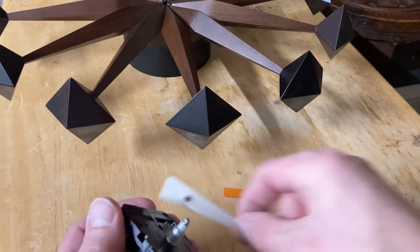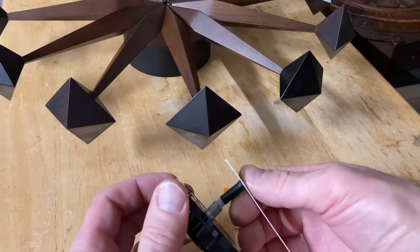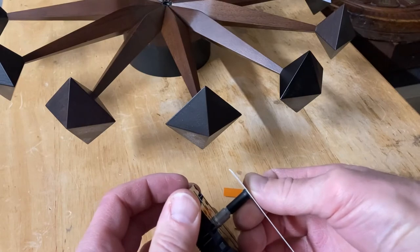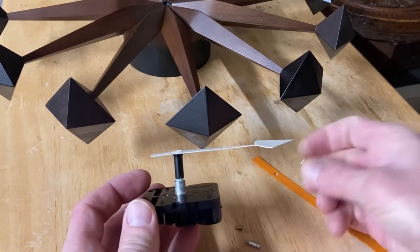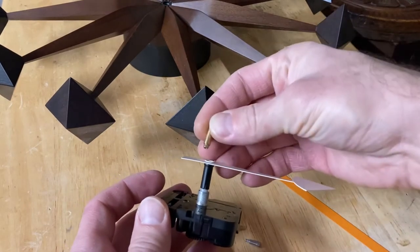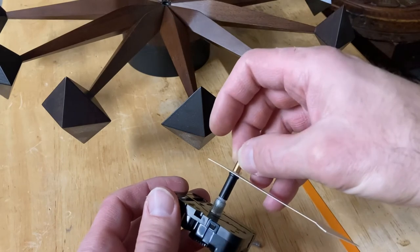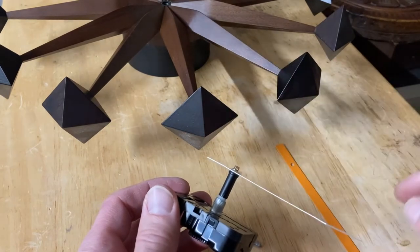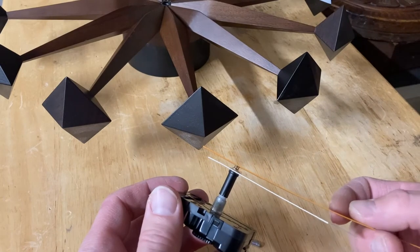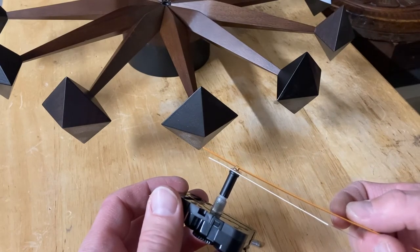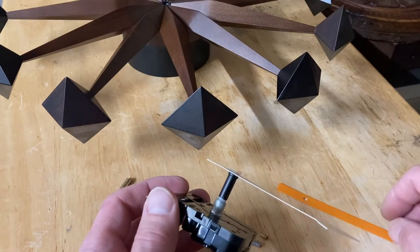So the hour hand is going to go on like so, right? And I need this metal piece to go in here and to go in there and stick out far enough to where I can attach the minute hand and they clear the case of the clock.